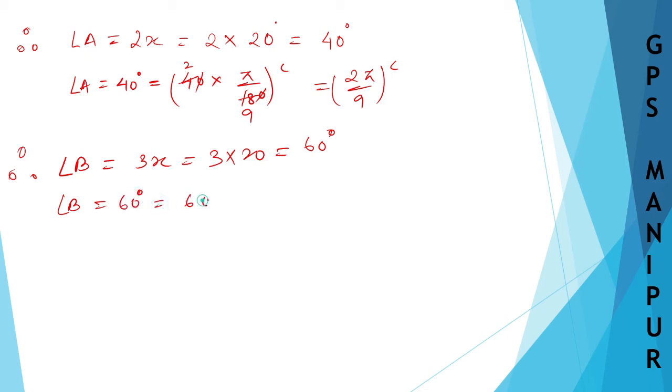Converting 60 degrees into radians: 60 into π by 180, which simplifies to π by 3 radians.